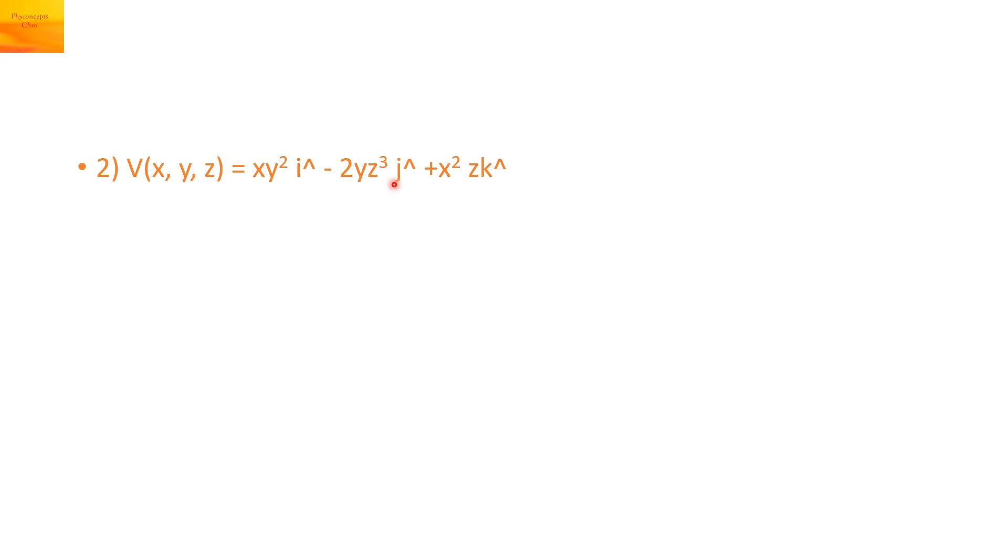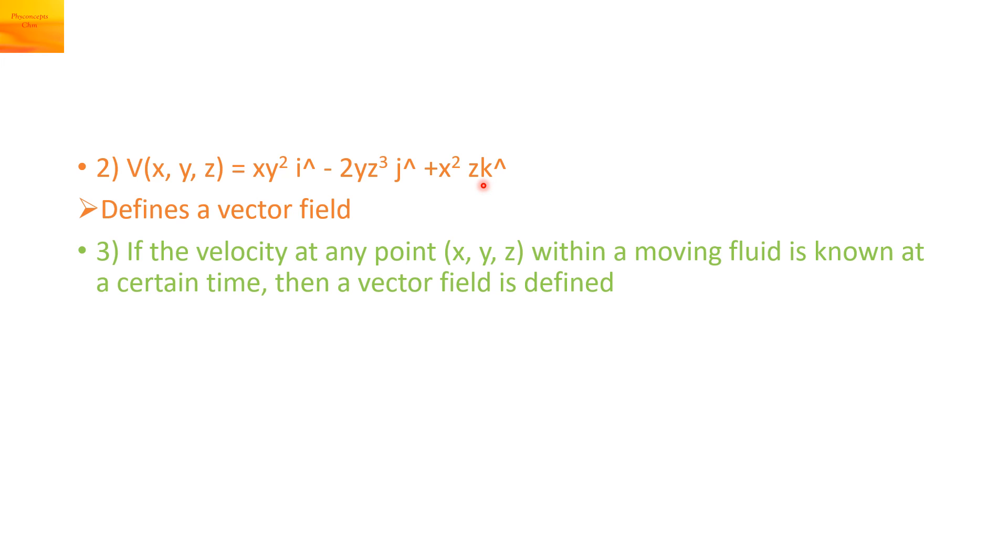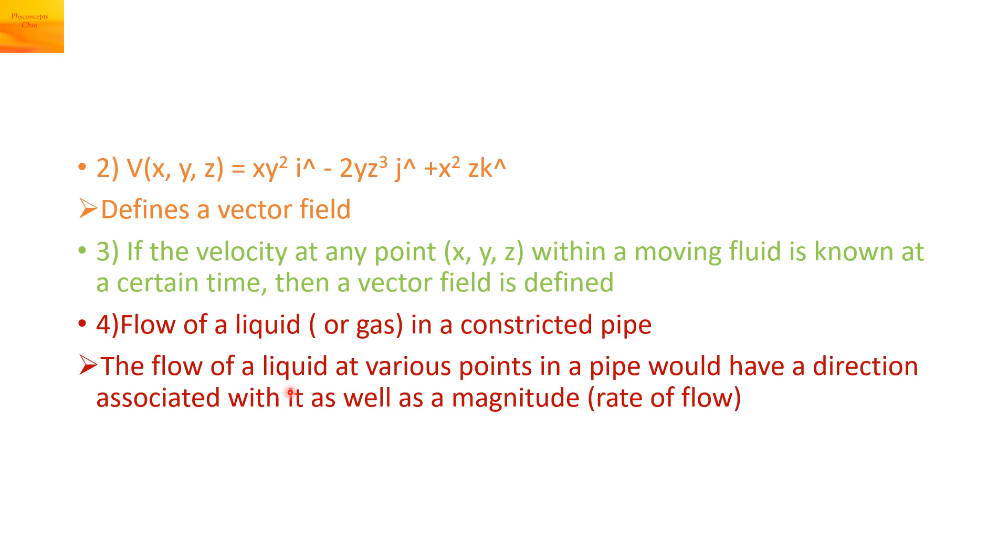This is another example. Capital V is a vector field. It depends upon x, y, z and it is given as xy square i cap minus 2yz cube j cap plus x square z k cap. This is also a vector field. You can also talk about the velocity at any point within a moving fluid. It is also a vector field or the flow of fluid in a constricted pipe. The flow will have direction as well as magnitude.